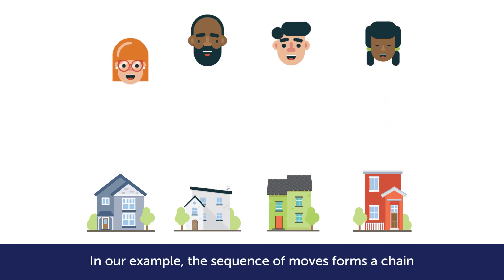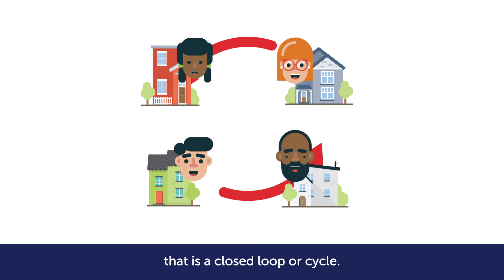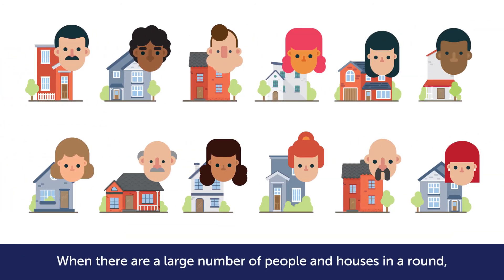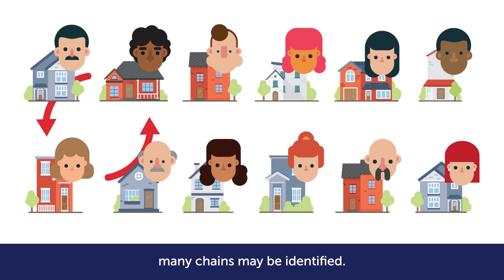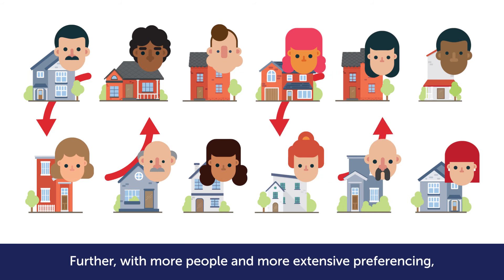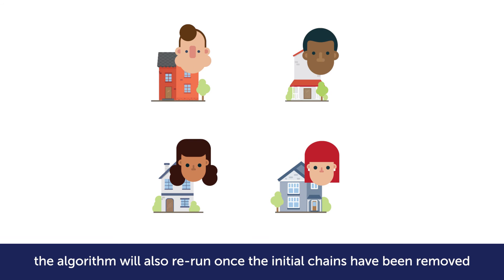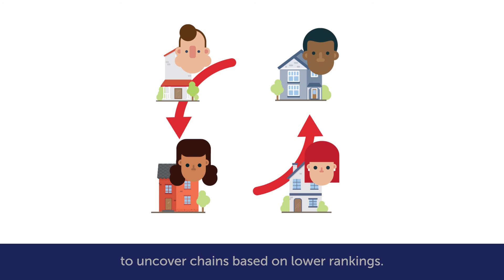The algorithm will test if starting with a different tenant will result in more matches. In our example, the sequence of moves forms a chain that is a closed loop or cycle. When there are a large number of people and houses in a round, many chains may be identified. Further, with more people and more extensive preferencing, the algorithm will also rerun once the initial chains have been removed to uncover chains based on lower rankings.